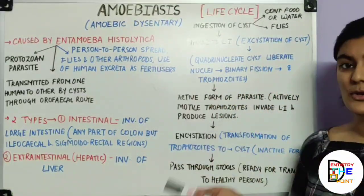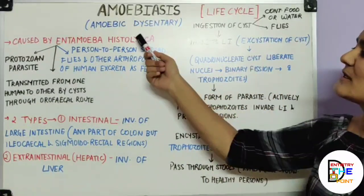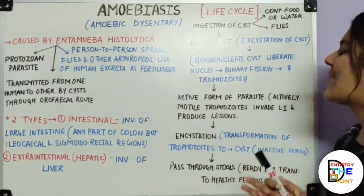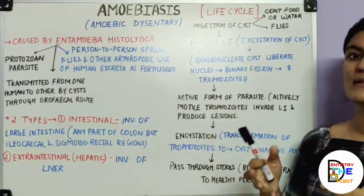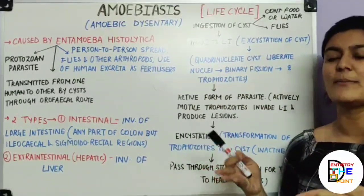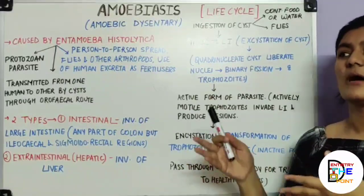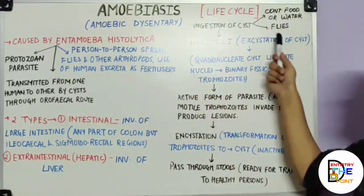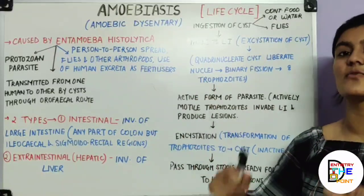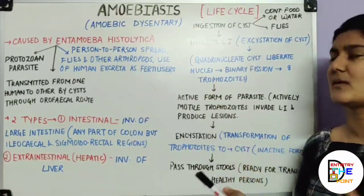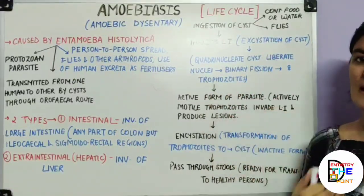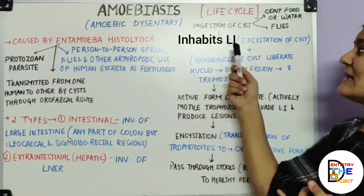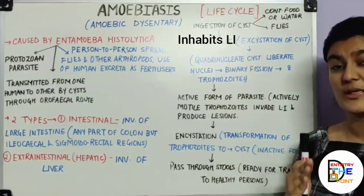Moving on to the pathogenesis and life cycle of this organism. First, there is an asymptomatic carrier who passes out feces contaminated with this pathogen. Through contaminated food, water, or flies, the cyst enters a healthy person's mouth and is ingested. The cyst then inhabits the large intestine, where two simultaneous processes occur in its lumen: excystation and encystation.